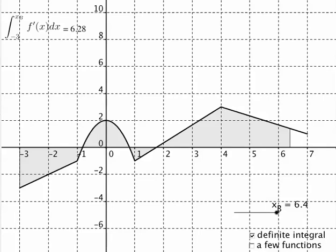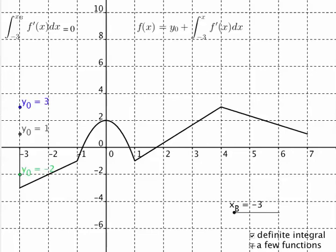So now what we want to do is I'm going to reset this to negative 3, and we're going to take a look at a couple of accumulation functions. So they're of the form y0, where I've defined y0 in three separate ways, negative 2, 1, and 3. Y0 plus the definite integral from negative 3 to x. We're going to evaluate this function at x sub b and plot the points and take a look at what happens. So let's do that.